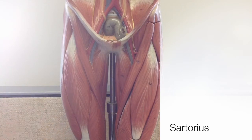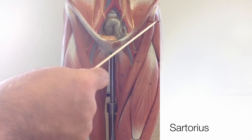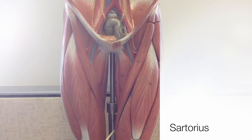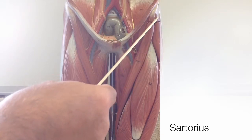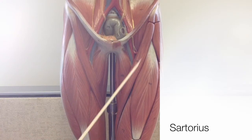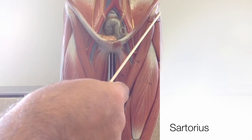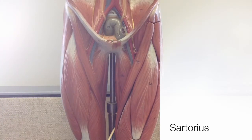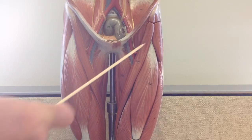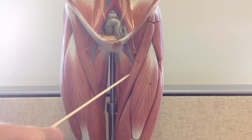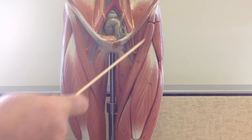The sartorius is the longest muscle in the body, and it crosses both the hip and the knee joint, running obliquely from the lateral side of the hip and thigh to the medial side of the thigh close to the knee. Its shape is like a strap — think of a seat belt that runs across your body in a similar fashion.